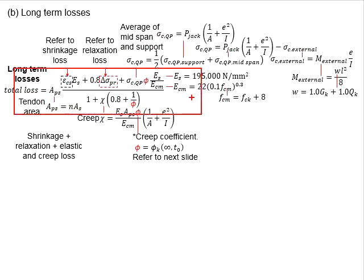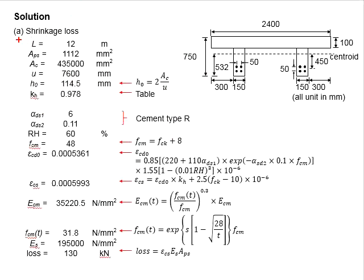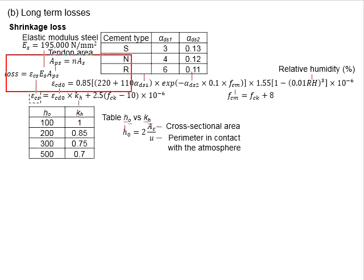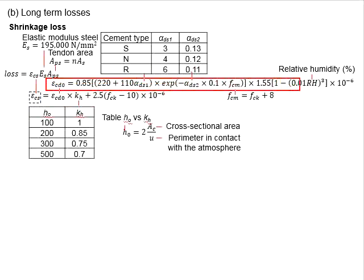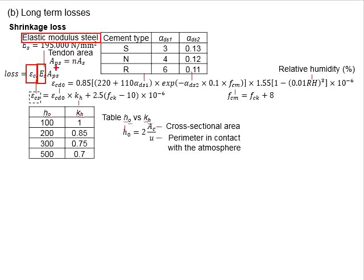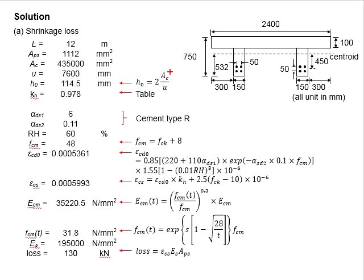Now let us first look into the shrinkage losses. The relevant equations may be referred from this slide, which you will need to determine the epsilon_cs in the functions of epsilon_cd naught. You have to determine the epsilon_cd naught here. This epsilon in the steel tendons is multiplied with the modulus of elasticity of the steel and also the total tendon area. With that, you will need to first determine the epsilon_cd naught.